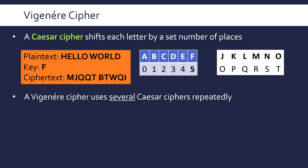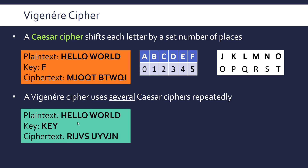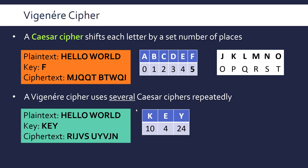The Vigenère cipher differs because it uses several Caesar ciphers repeatedly — several shifts — but now with a key that isn't a single character; it's several characters, so we have a string as our key. For this example, let's use 'KEY' as our key. Each character has a numerical representation: K is 10, E is 4, and Y is 24. Those are the shifts represented by each letter in the key.